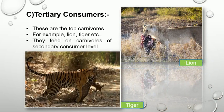The tertiary consumers are the top carnivores. For example, lion and tiger. They feed on carnivores of the secondary consumer level.